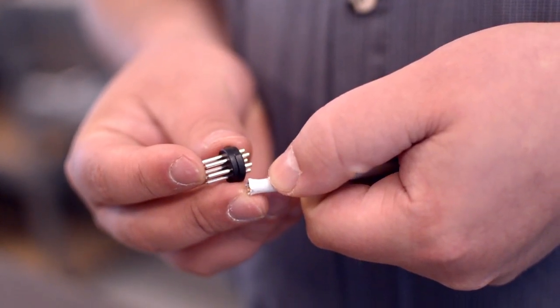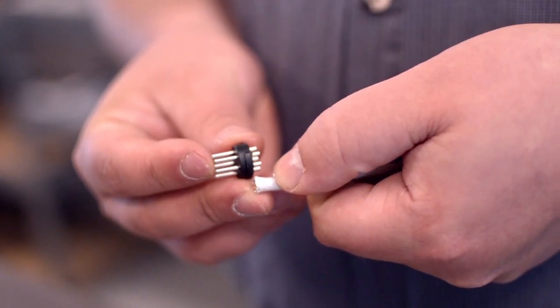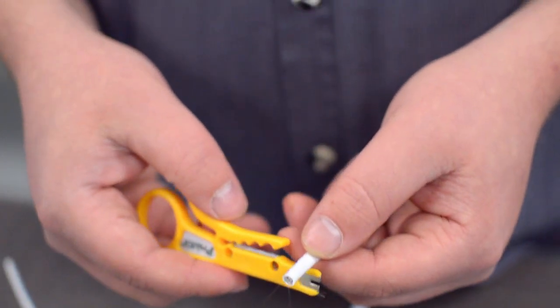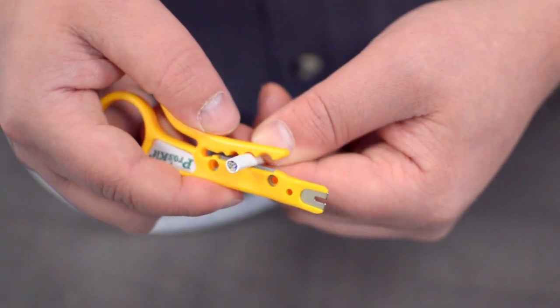Start by inserting the plastic boot over the jacket. Measure how far you will need to strip back the jacket by holding the cable up against the base of the connector. Then, strip the cable jacket using the wire strippers.